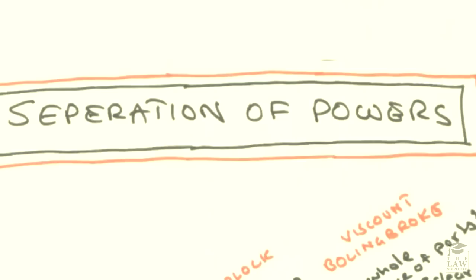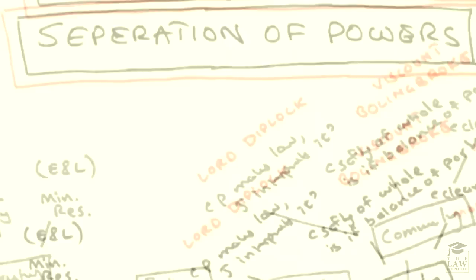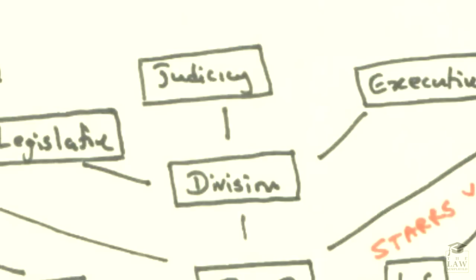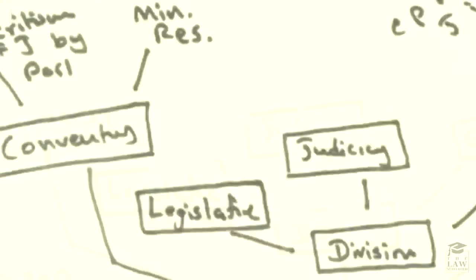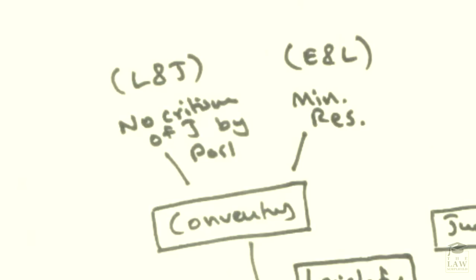Now that we've had a brief overview of the principle and concept of separation of powers, let's have a quick summary. The main foundation of the topic is the three divisions of state: the legislature, the judiciary, and the executive. There are various conventions in effect, much like the constitutional conventions discussed earlier, and there are notable relationships between the legislature and the judiciary, as well as between the executive and the legislature. For instance, between the legislature and the judiciary there is a convention that there must be no criticism of the judiciary by parliament.